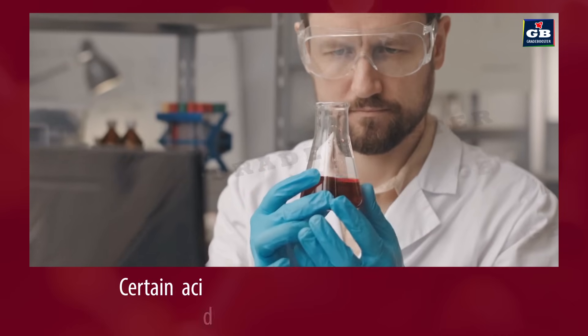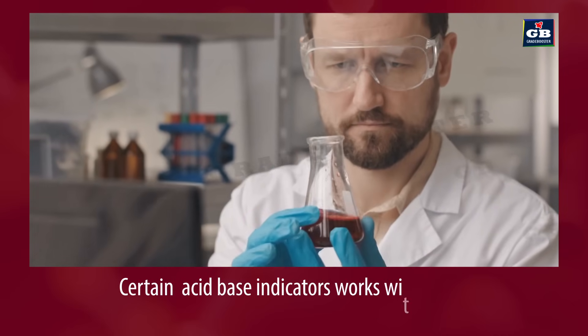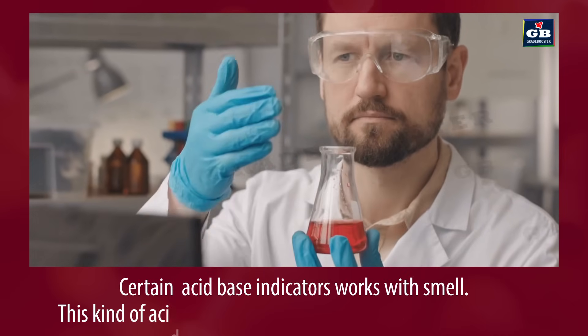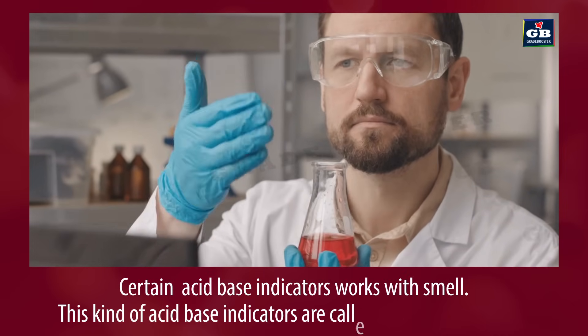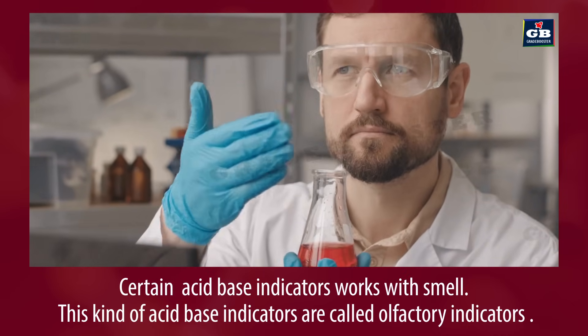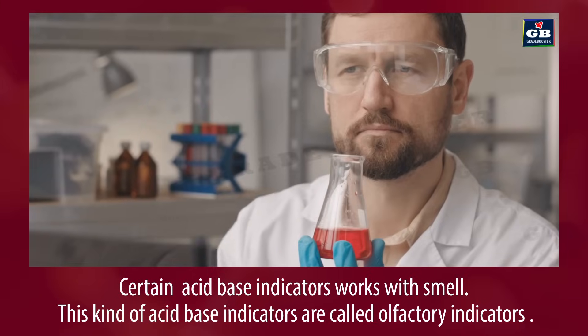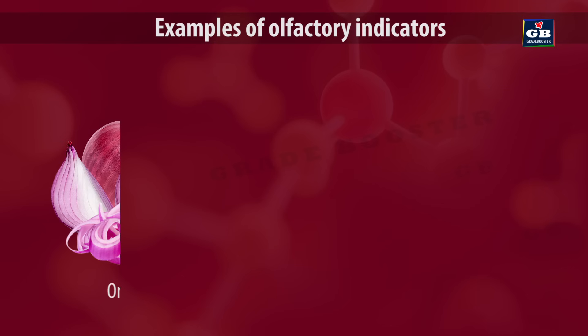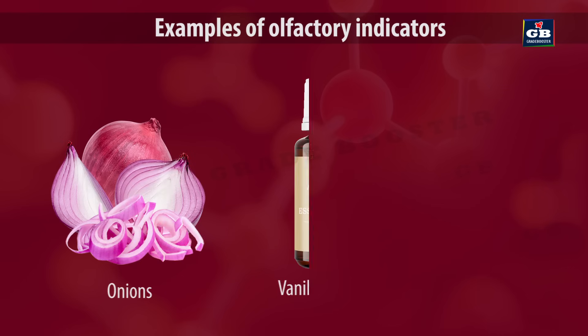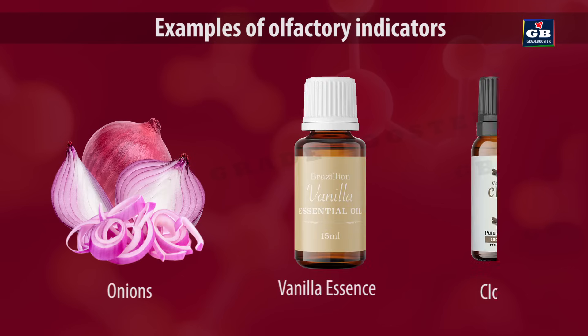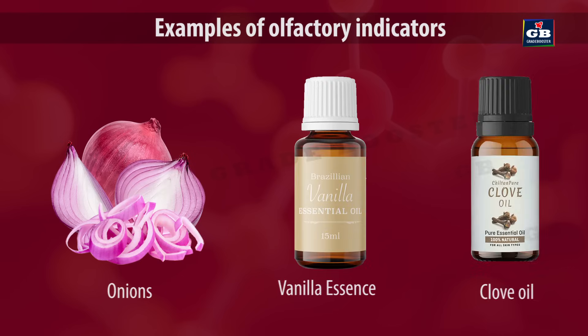Certain acid-base indicators work with smell. These kinds of acid-base indicators are called olfactory indicators. Examples include onion, vanilla essence and clove oil.